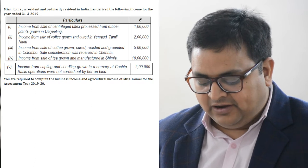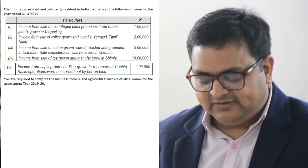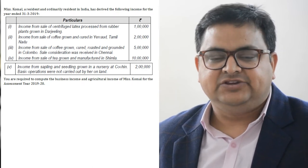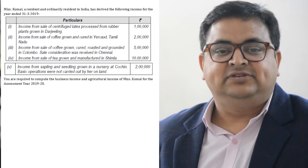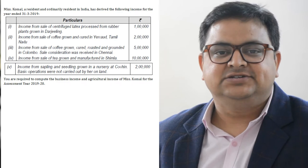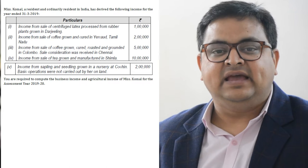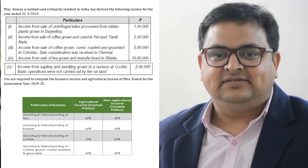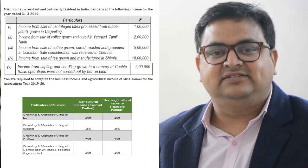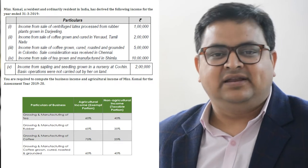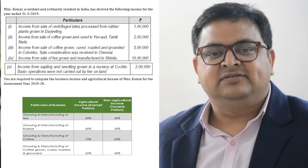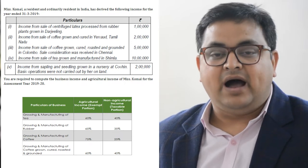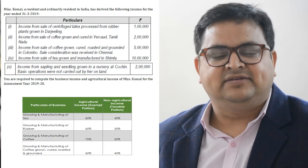The first point says income from sale of centrifuged latex processed from rubber plants grown. If any income is related to rubber plantation, it has both agriculture and business income components. From one lakh income, how much is agriculture and how much is business? There is a ratio defined under Income Tax Rules which says 65:35 - that is 65 percent of such income is related to agriculture. A tip to remember: the larger percentage is related to agriculture. So 65 percent is agriculture income and 35 percent is non-agriculture, that is business income. You can draw two columns - one for business and one for agriculture - and split accordingly.